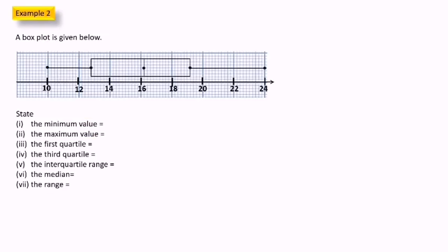Example 2: a box plot is given below. State the minimum value. The minimum value is here, equal to 10. The maximum value is here, equal to 24. The first quarter — one box equals 0.2, so here is four boxes — so the first quarter is equal to 12.8.